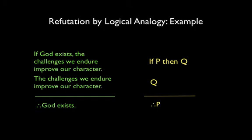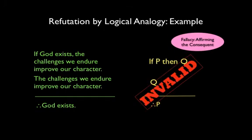This argument form, which commits the fallacy called affirming the consequent, is invalid. We can show that the original argument about the existence of God is invalid by simply using less controversial sentences for P and Q.